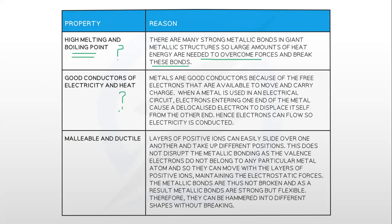Why are metallic structures good conductors of heat and electricity? Because of the free electrons that are available to move and carry charge. When a metal is used in an electrical circuit, electrons entering one end of the metal can cause delocalized electrons to displace from the other end. Hence, electrons can flow and electricity is conducted.